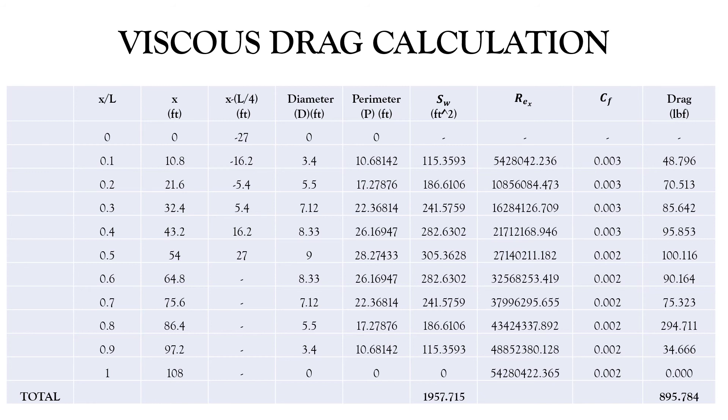Then we have x minus L by 4. We have the value of x. We know L is equal to 108 and we can see the value to be repeating at one stage. So the leftover data is not required. Next, we have D, diameter in feet. Again, the diameter is considered to be maximum at the center and a desired percentage has been distributed throughout the section.